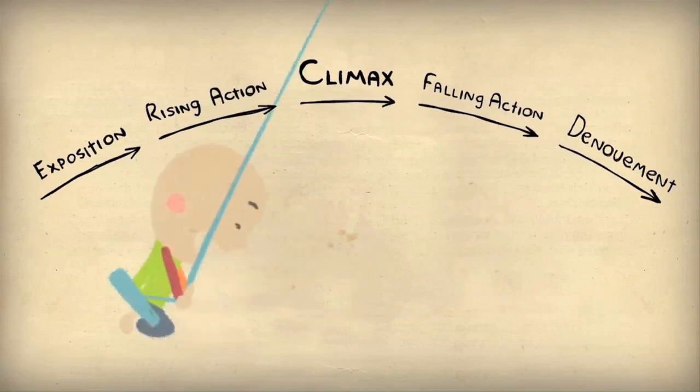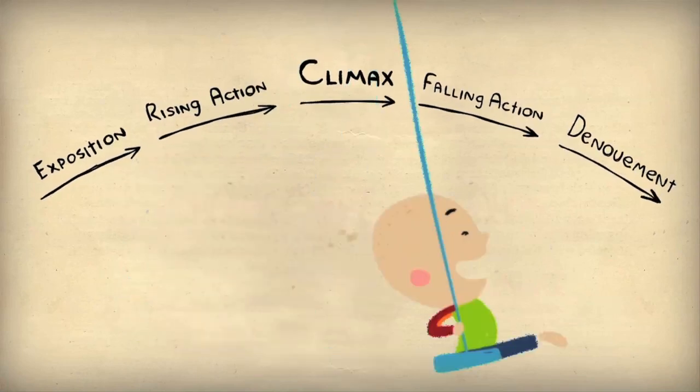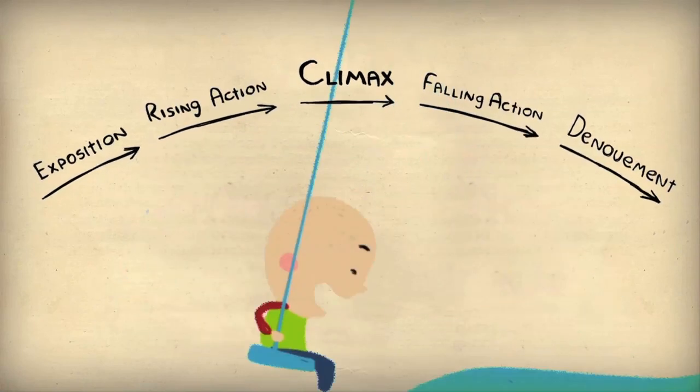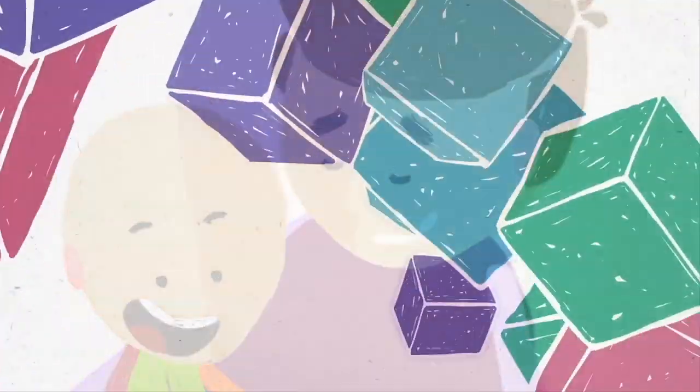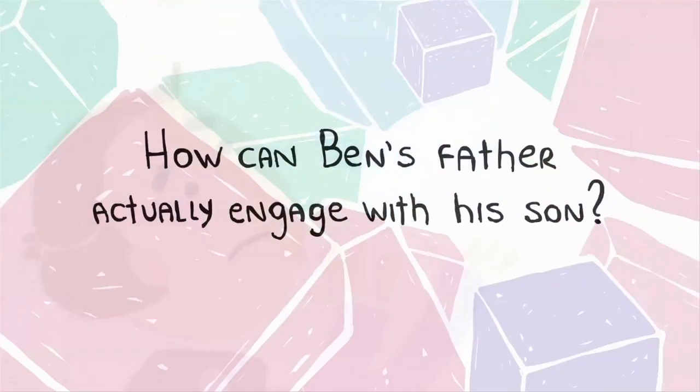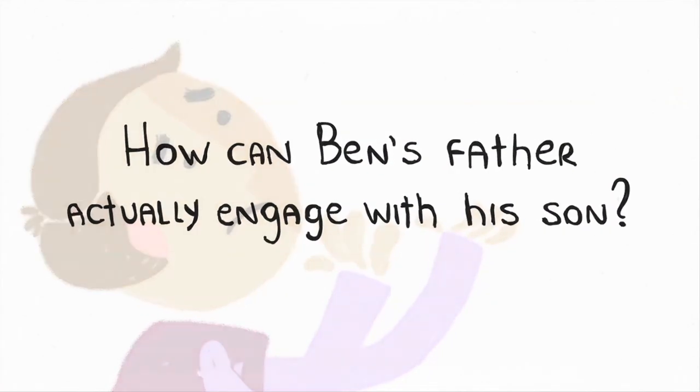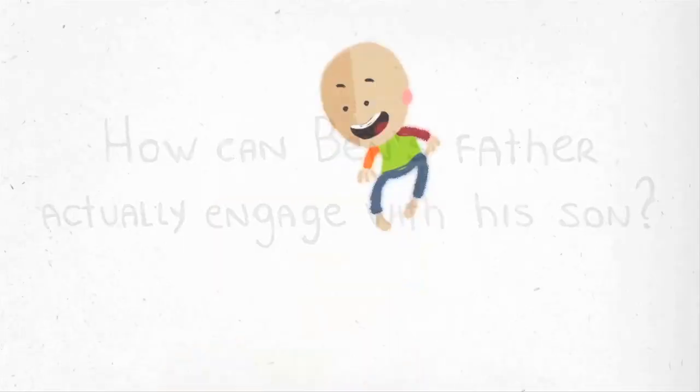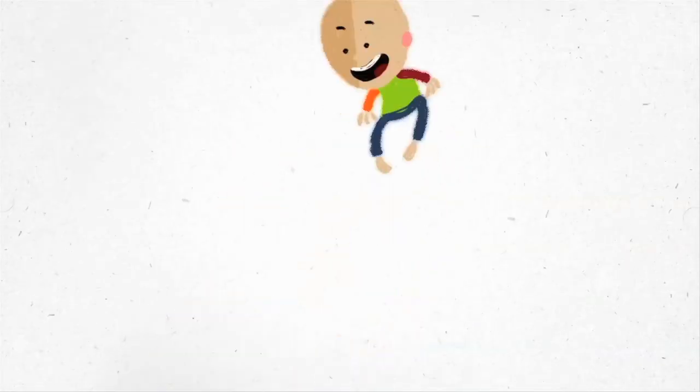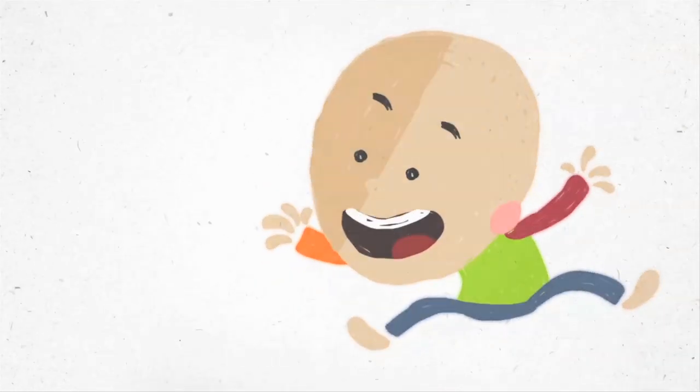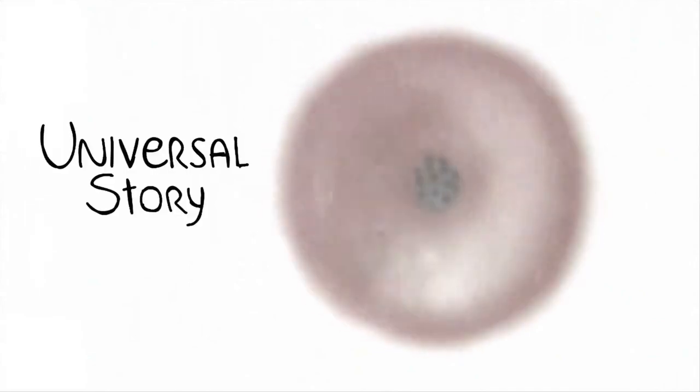The story of Ben and his father talking about knowing his son is dying has those aspects. It captures their attention. There's a coming climax. How can Ben's father actually engage with his son in this wonderful, relaxed, playful way, yet knowing that his son will die soon? It seems like there may be a universal kind of story structure.